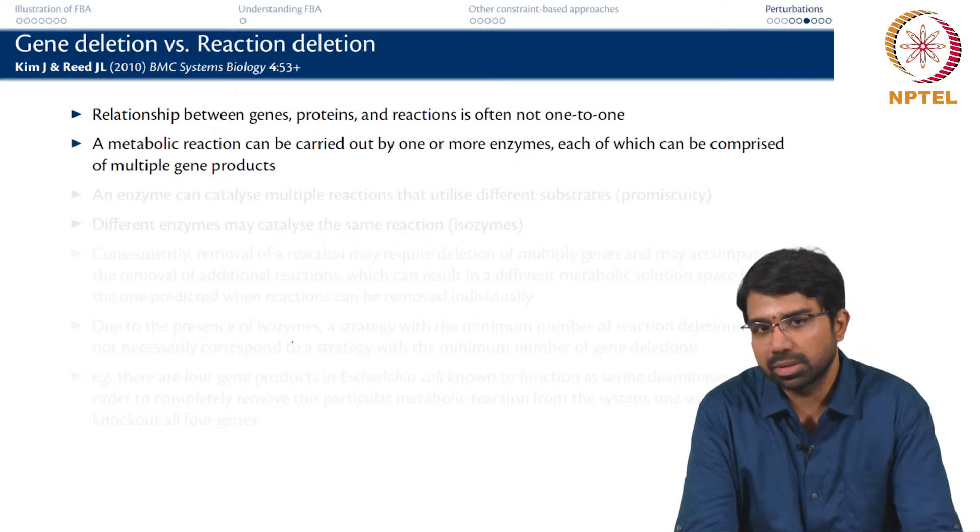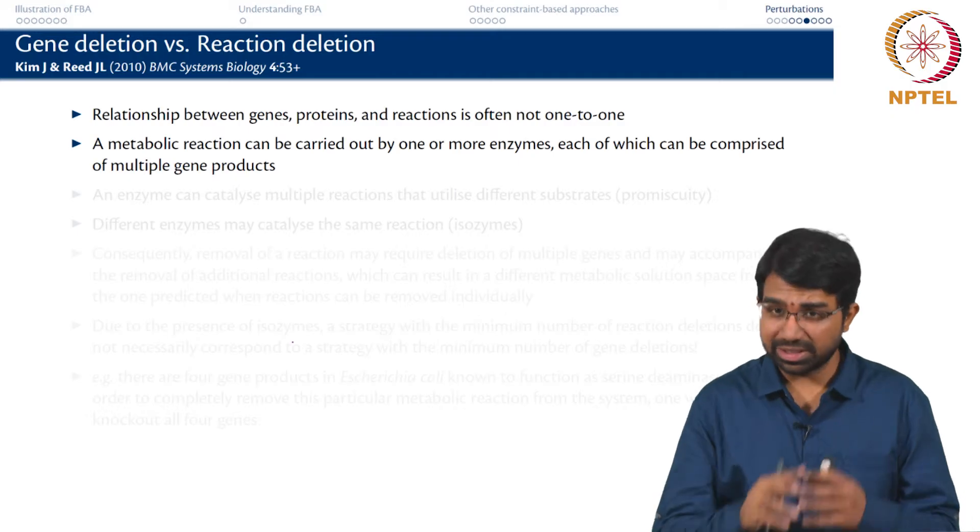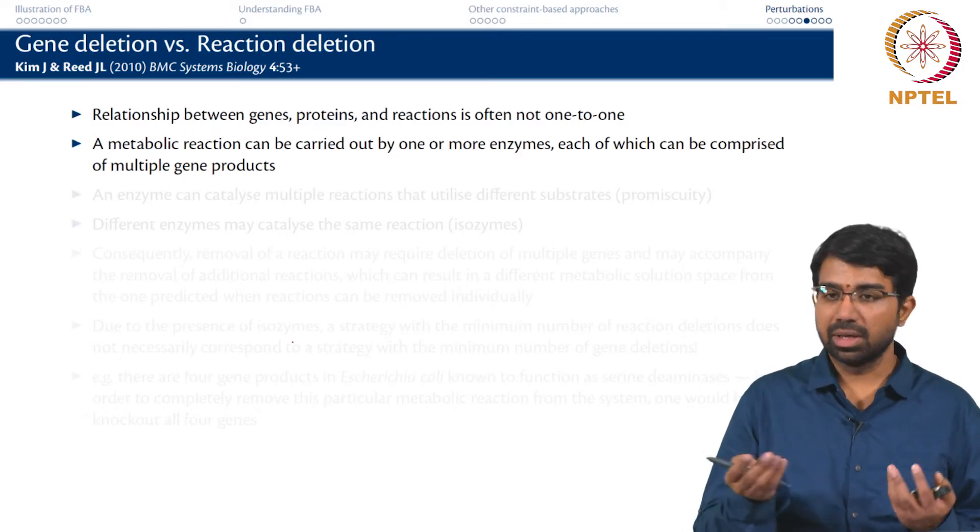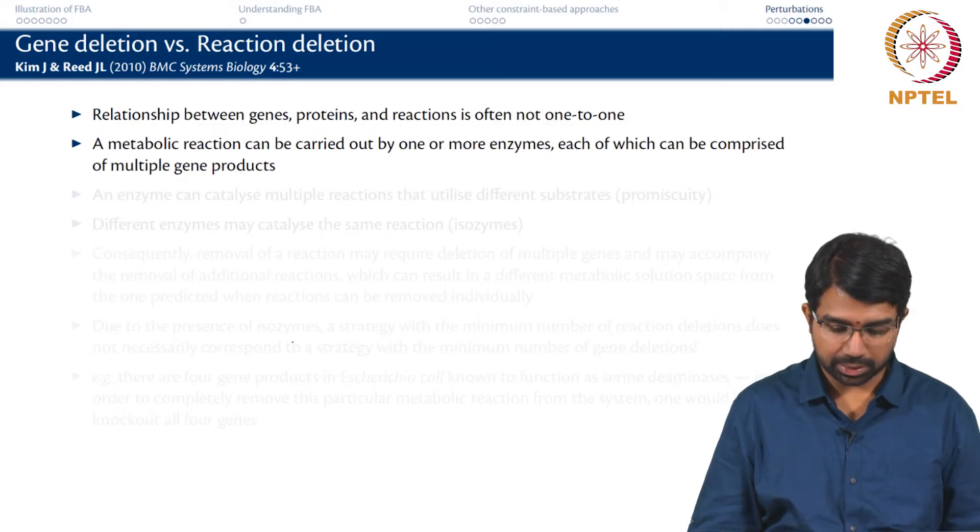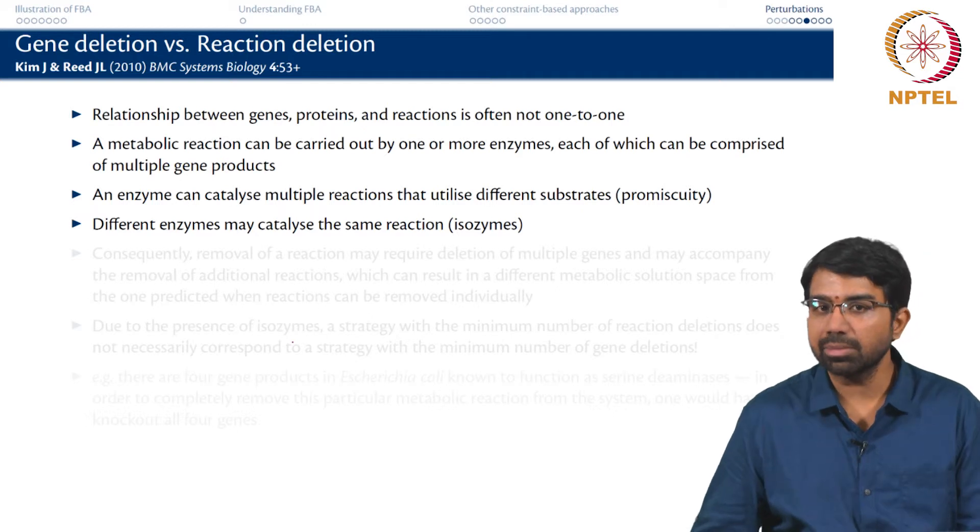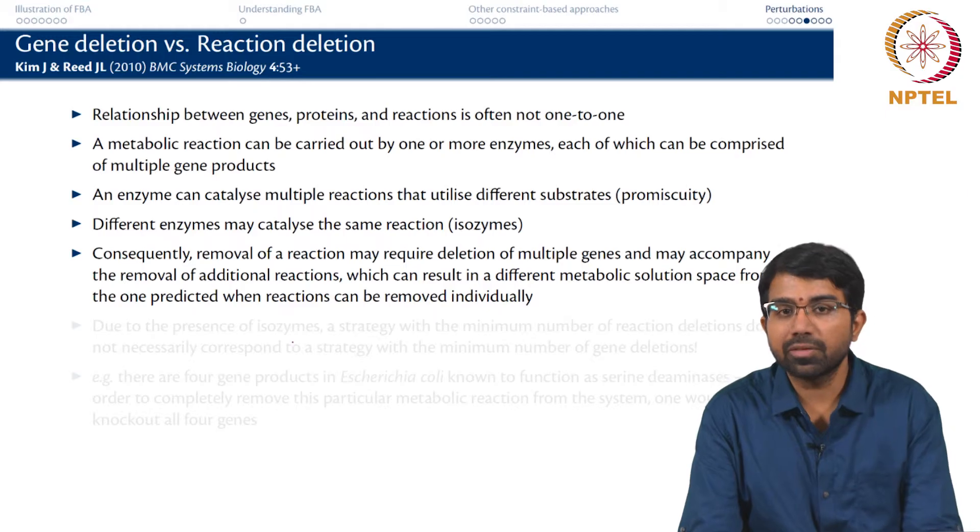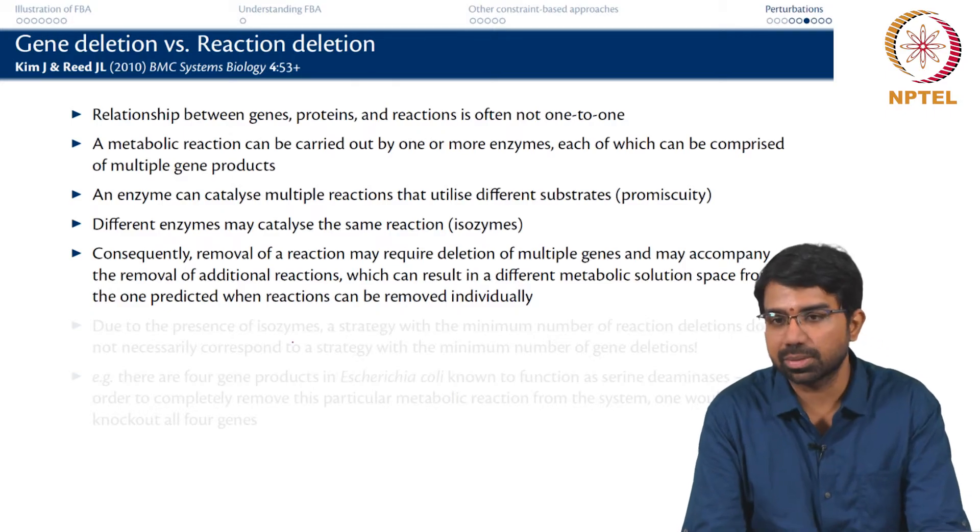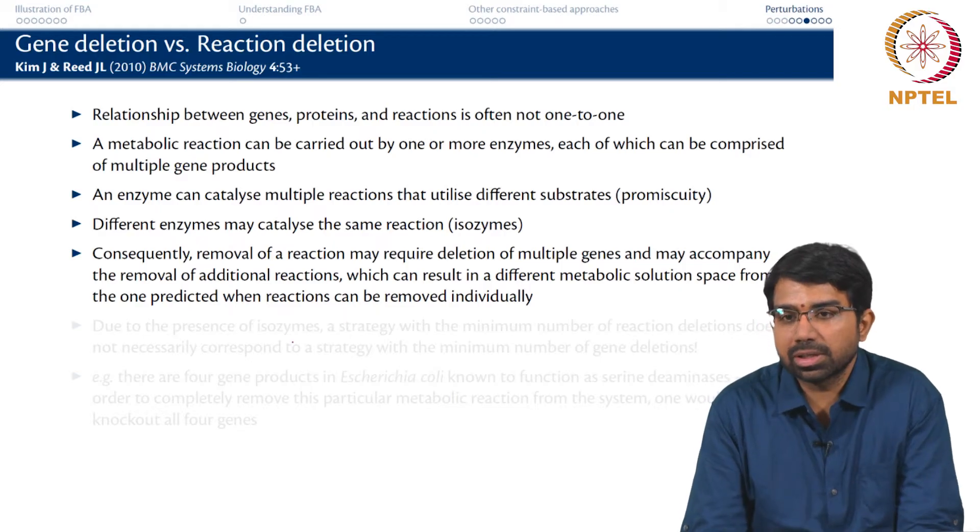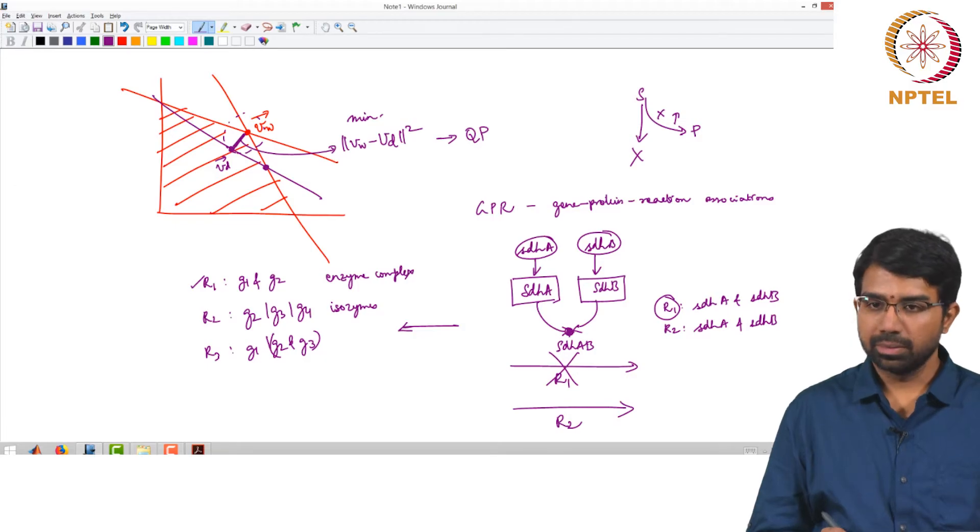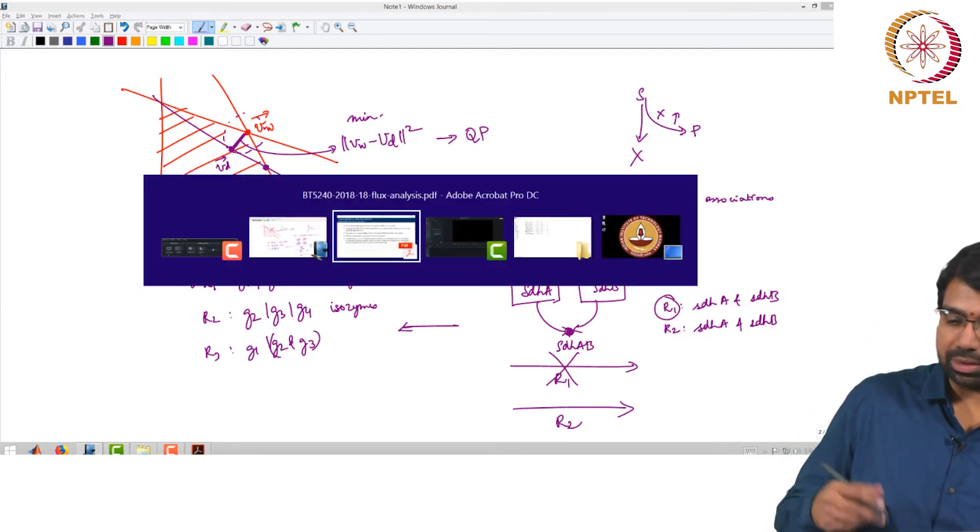A metabolic reaction can be carried out by one or more enzymes. It could be a multi-enzyme complex that is carrying out a complex series of reactions. The same enzyme carries out 20 reactions - it is quite possible. It could be a polymerase or a fatty acid synthase. An enzyme can catalyze multiple reactions that utilize different substrates - promiscuous enzymes. Different enzymes may catalyze the same reaction - your isozymes. Consequently, the removal of a reaction may require deletion of multiple genes and may accompany the removal of additional reactions as well, which can result in a very different metabolic solution space from what you do when you just remove one reaction at a time. When you remove G2 here, it takes away R1 and R3. It has effect on several reactions at the same time.